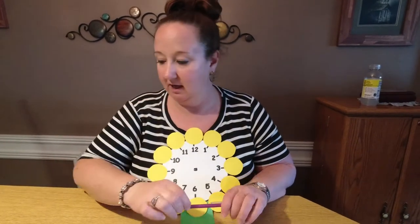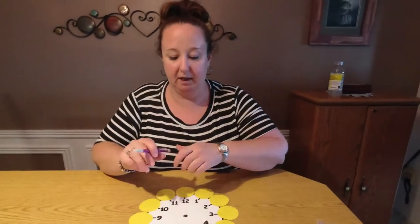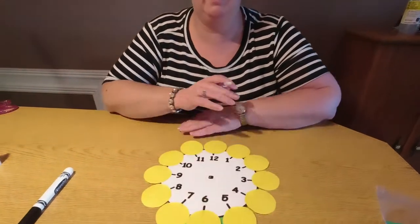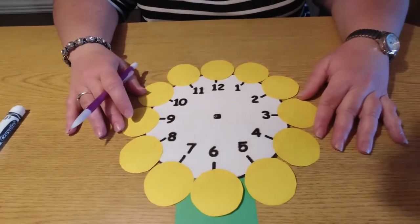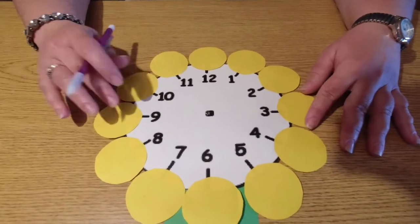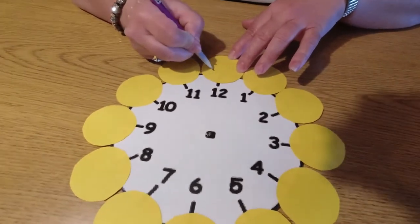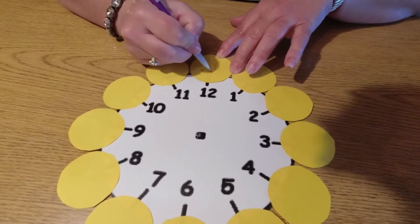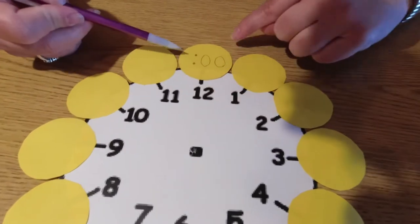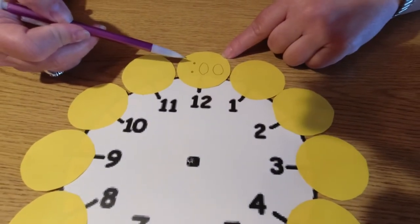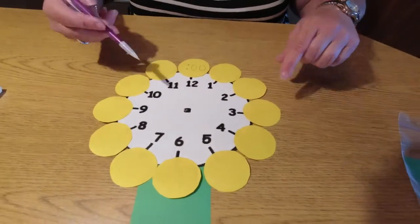We're going to write them in pencil first and then we'll trace over them with our black marker or if you have a sharpie at home you can use your sharpie. When we write numbers on the clock for the minutes we're going to write the colon first. Remember the colon is two dots and then after the colon we have to write two numbers. So on the very first one I'm going to write the colon and then I'm going to write zero zero because we know when the minute hand is on the 12 it's zero minutes after the hour and we say o'clock. We're going to go around the clock counting by fives and fill that in.